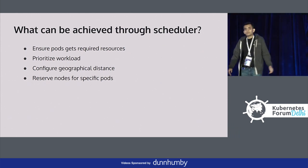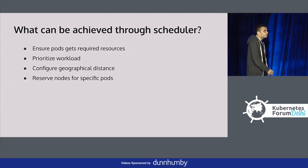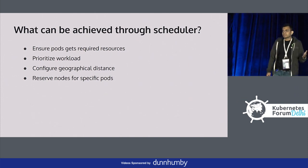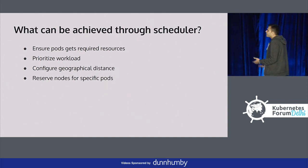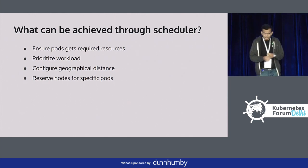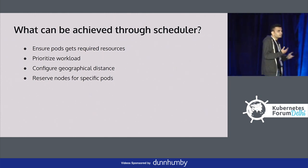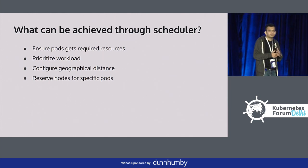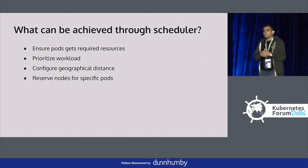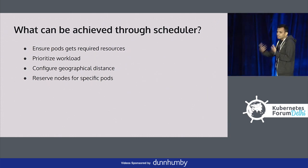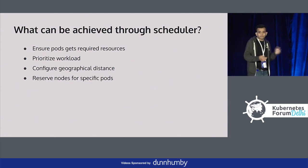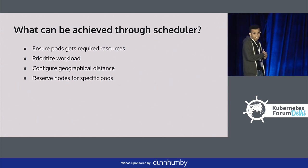You can prioritize workloads. Say you have two services A and B, and service A is of higher priority. If your cluster is running out of resources, the pods of service B will automatically get terminated, and the pods for service A will get started, or it will auto-scale based on your settings.